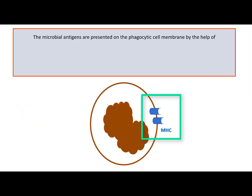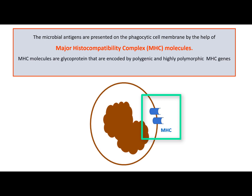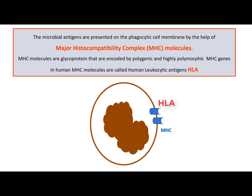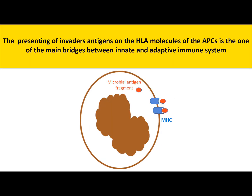The digested microbial antigens are presented on the phagocytic cell membrane by the help of major histocompatibility complex molecules, abbreviated as MHC molecules. MHC molecules are glycoproteins that are encoded by polygenic and highly polymorphic MHC genes. In humans, MHC molecules are called human leukocytic antigens, abbreviated as HLA. The presenting of invaders' antigens on the HLA molecules of the APCs is one of the main bridges between the innate and adaptive immune systems.